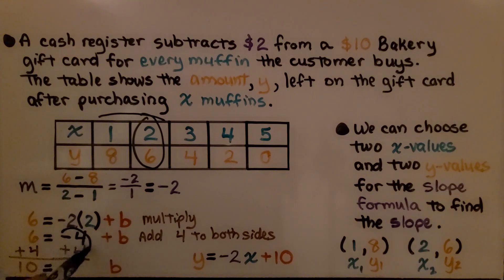Negative 4 plus 4 makes a zero pair. We have zero here. But now on this side, we have 10 equals b. We know the y-intercept b is 10. We know the slope is negative 2. We can write our equation y equals negative 2x plus 10.